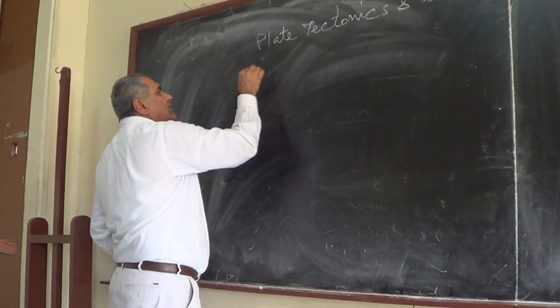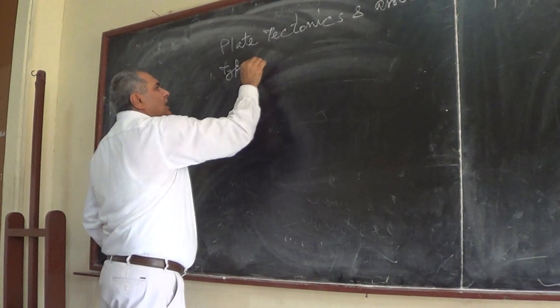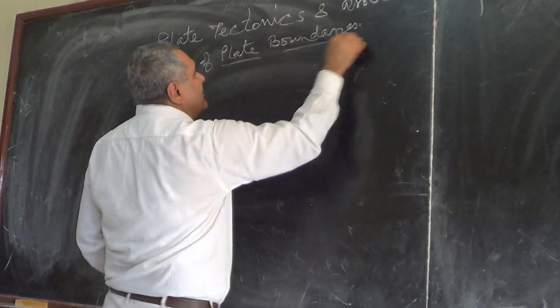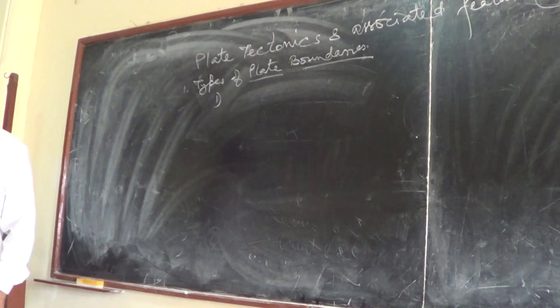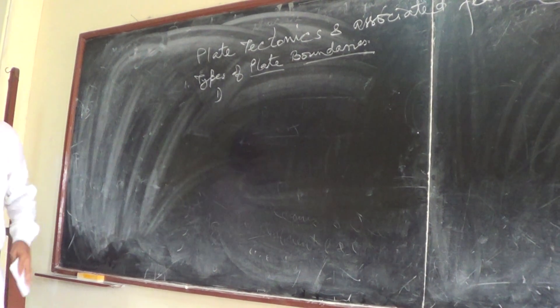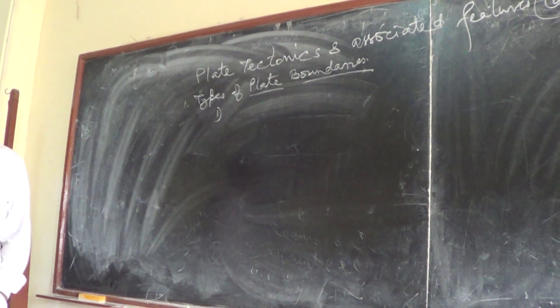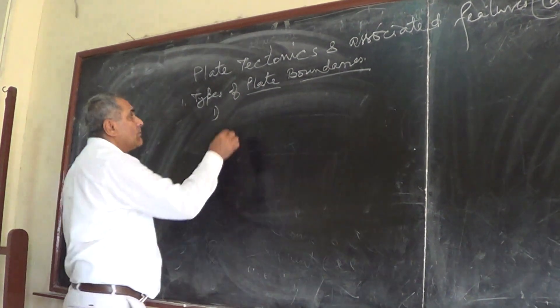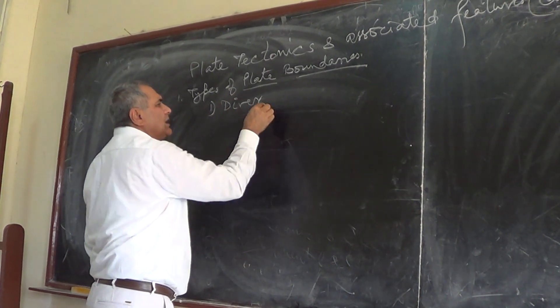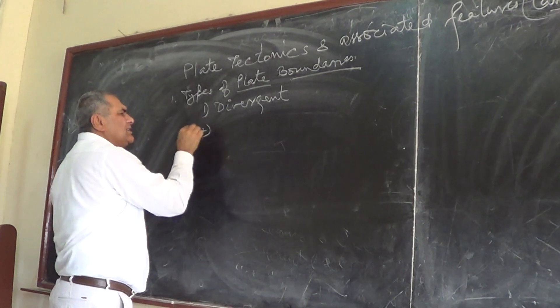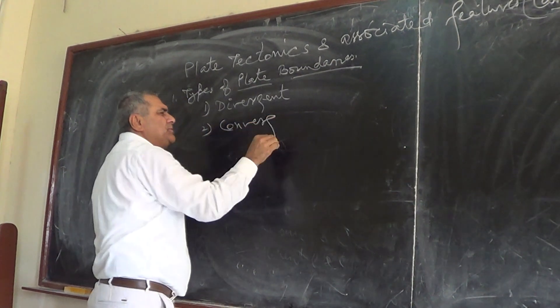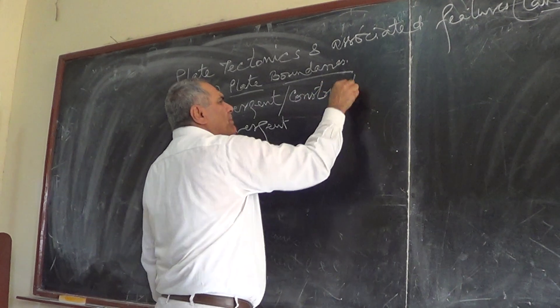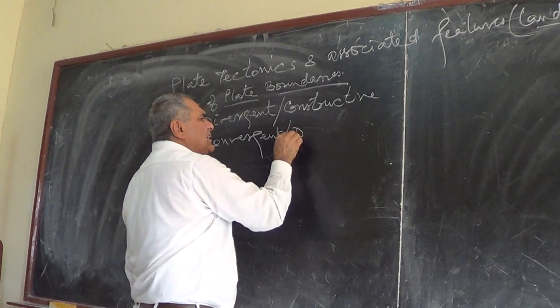There are types of plate boundaries. Name three different types of plate boundaries. Divergent plate boundary. Second is convergent. Divergent are also known as constructive, and convergent are known as destructive.